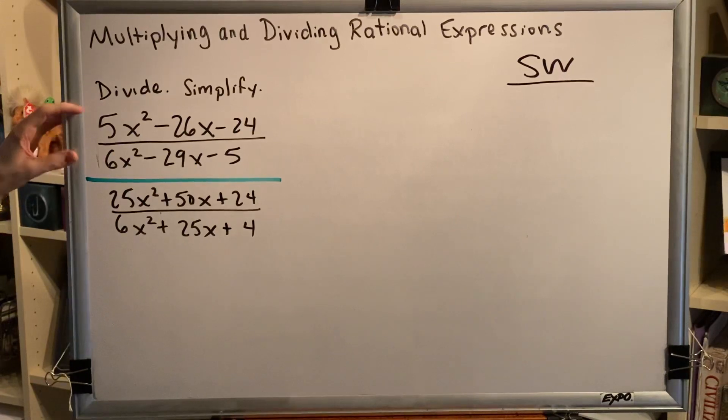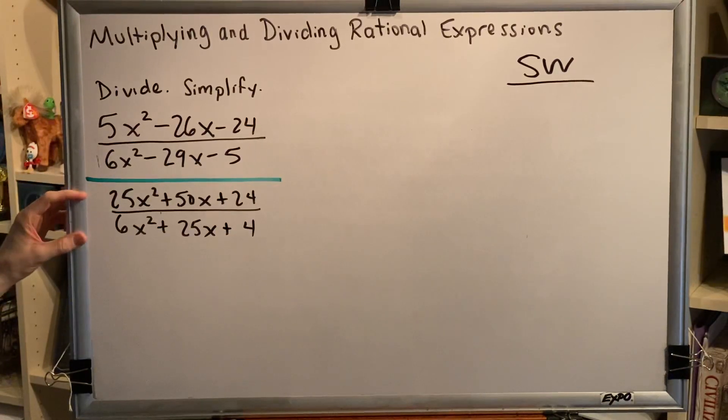We have two rational expressions, both shown here in black, and they're being divided, shown here with the green division bar. The top rational expression is the trinomial 5x² - 26x - 24 over the trinomial 6x² - 29x - 5. The bottom rational expression also has two trinomials. The top one is 25x² + 50x + 24 over the bottom one 6x² + 25x + 4.